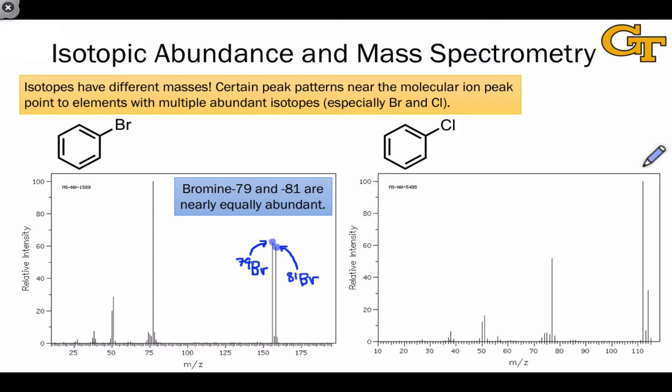The spectrum of chlorobenzene shown here displays a similar effect, with two apparent molecular ion peaks, one at 112 and one at two mass units higher, 114.